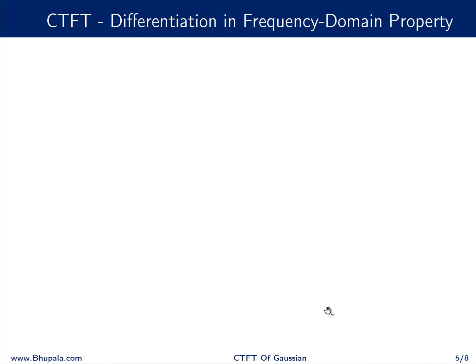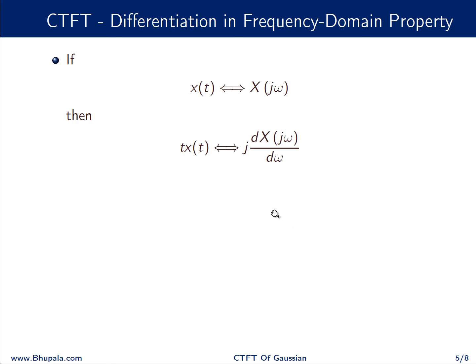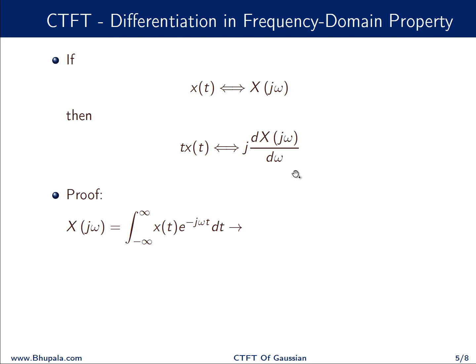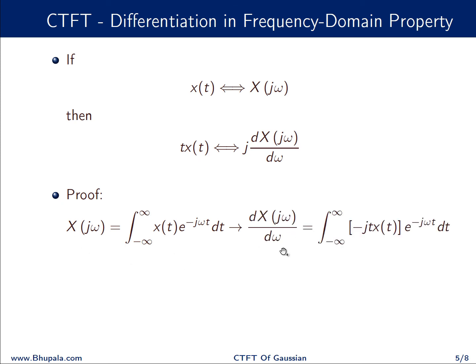Next, let us proceed to the differentiation in frequency domain property of the Fourier transform. Again, if x(t) has X(jω) as its Fourier transform, multiplying x(t) by t in the time domain translates to j times the differentiation of the Fourier transform with respect to ω. To prove this, we use the definition of the Fourier transform.